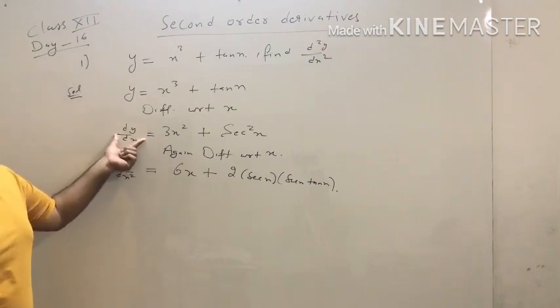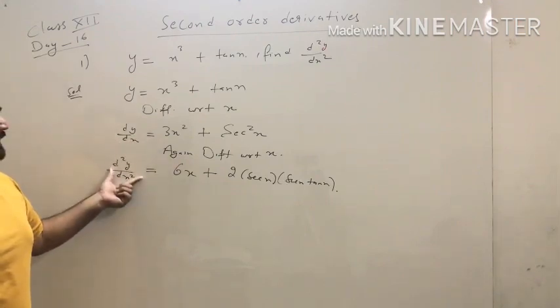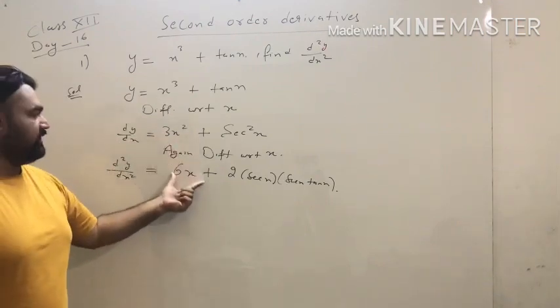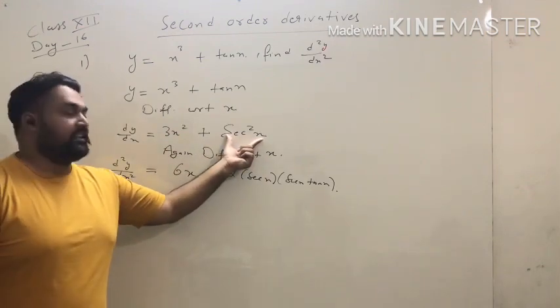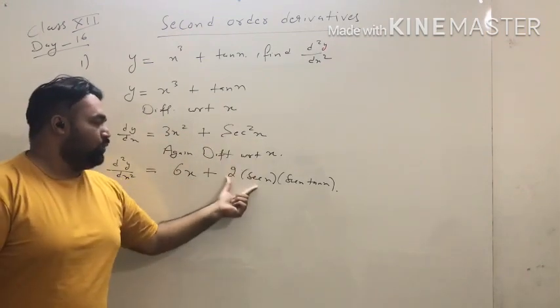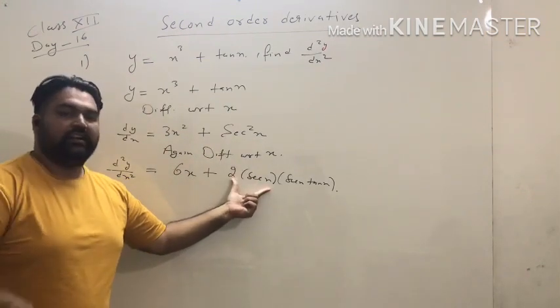The derivative of d/dx applied again gives d²y/dx². The derivative of 3x squared is 6x, and the derivative of secant squared x is 2 secant x · secant x tan x.